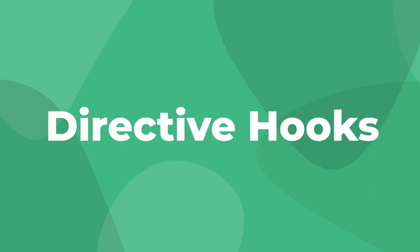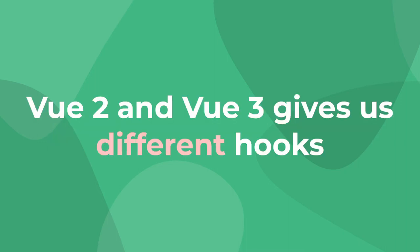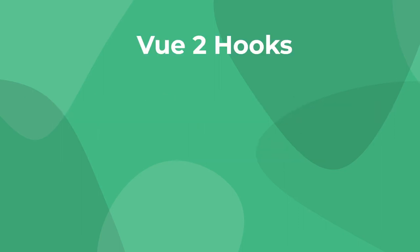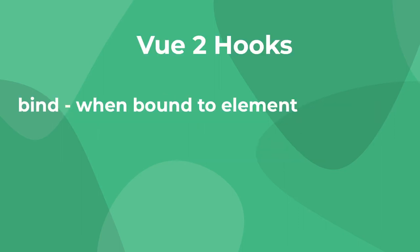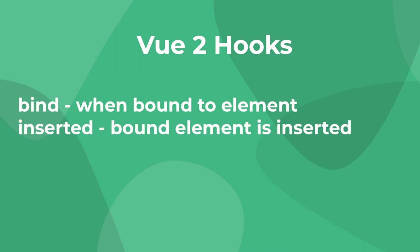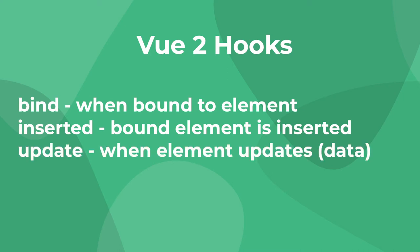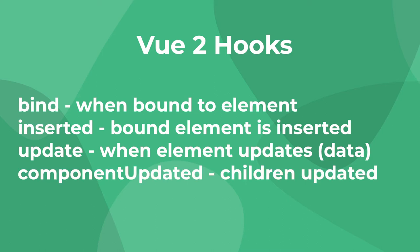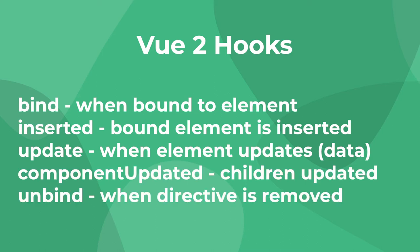The first concept to understand is that like a component and its lifecycle hooks, each Vue directive has its own hooks that can trigger events. These directive hooks are different in Vue 2 and Vue 3. In Vue 2, the directive hooks were called: bind, which is called once the directive is bound to an element; inserted, when the bound element is inserted into its parent node; update, called when the element updates but the children haven't updated yet; component updated, called after those children have updated; and unbind, called once the directive is unbound from an element.